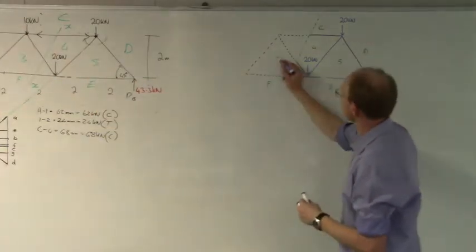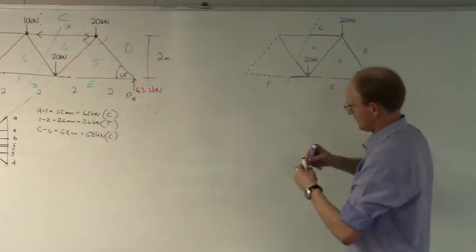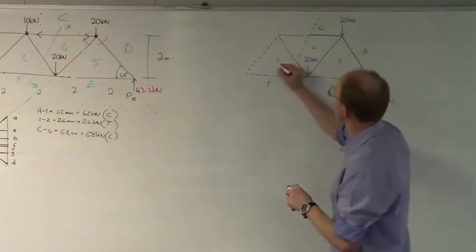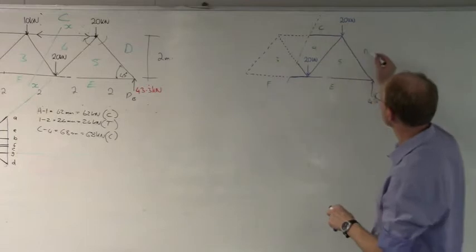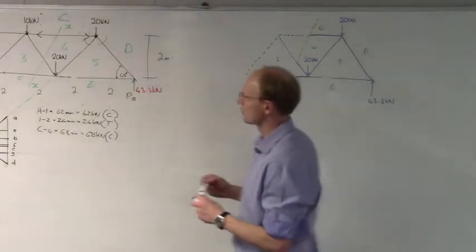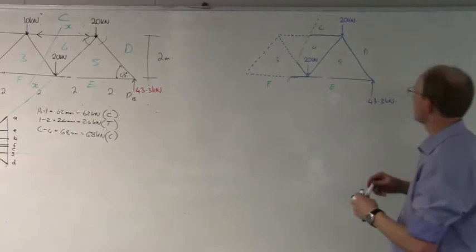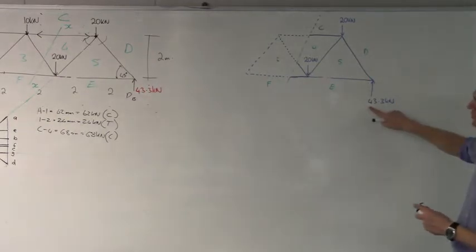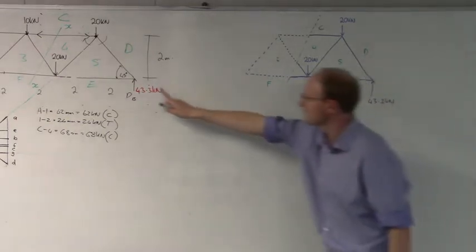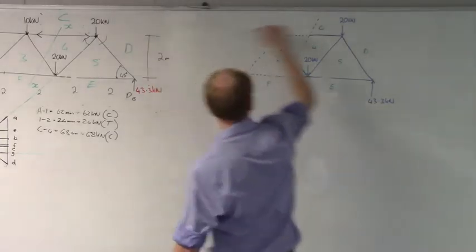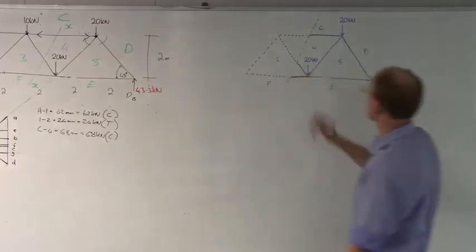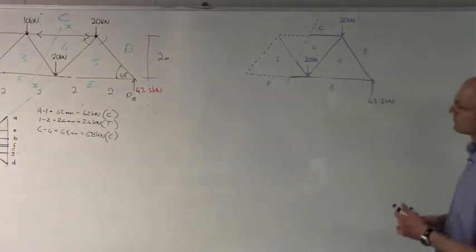I keep my numbering as it is. This is going to be 3F, C4, D5, E5 — same as with your Bow's notation here — and you've transferred your forces onto here. So I've got 43.3 over here, a 20 over here, that's the same. I've got a 20 kilonewton here, and those are all the forces I've got. That's the forces you keep.